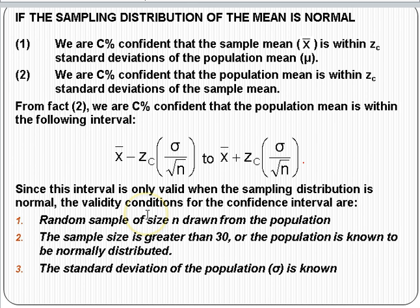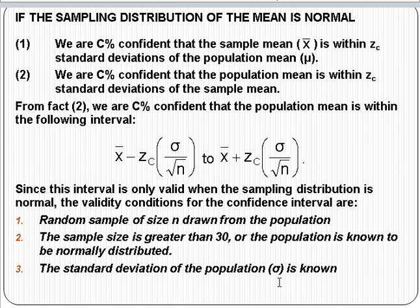Keep in mind that this is all based on normality — the validity condition for the sampling distribution. Again: a random sample of size N, sample size greater than 30 or a population known to be normal, and the standard deviation of the population is known. That last one is a key condition, which we'll explore and deviate from a little bit in the next couple of sessions.